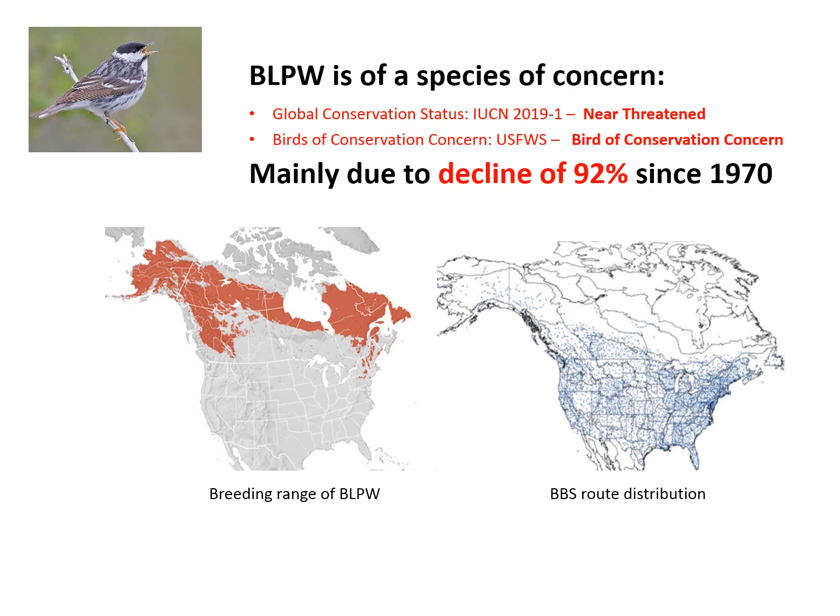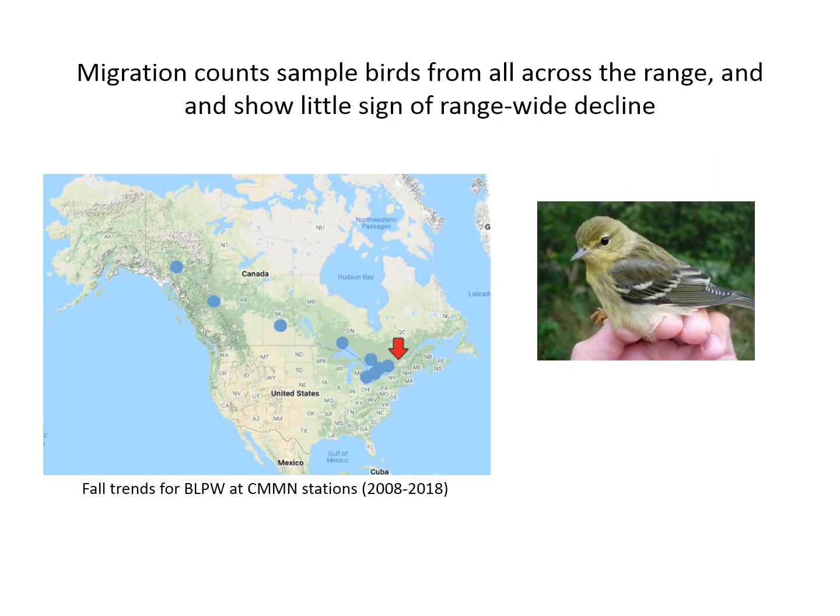So the decline in the BBS is not highly certain. In contrast, migration monitoring stations are going to count birds from the entire breeding range, because those birds have to pass through southern Canada on their way south and again on their way north.